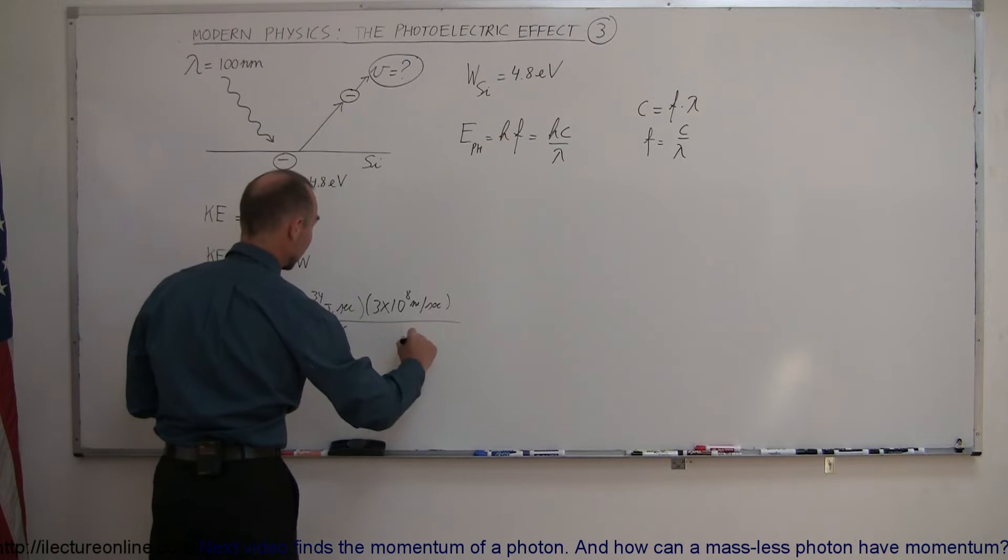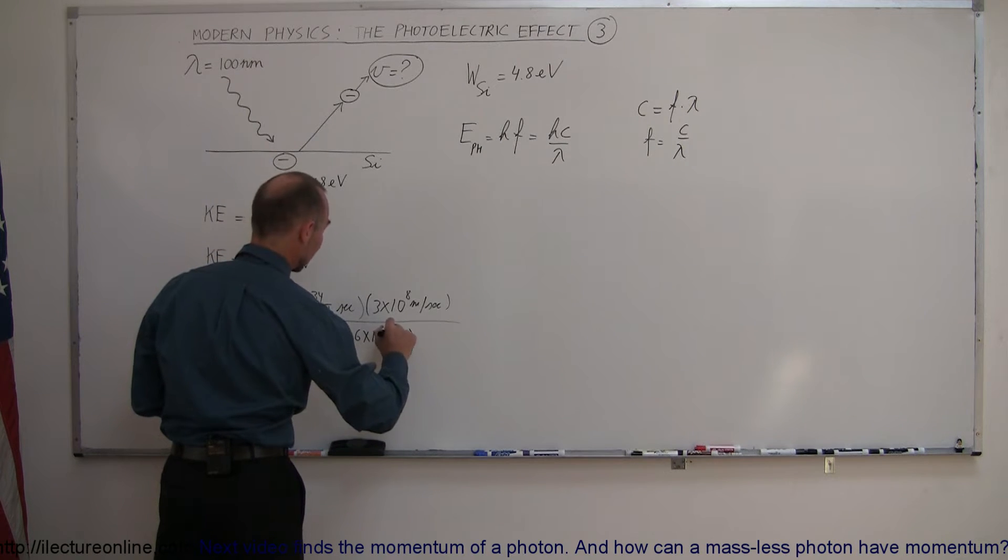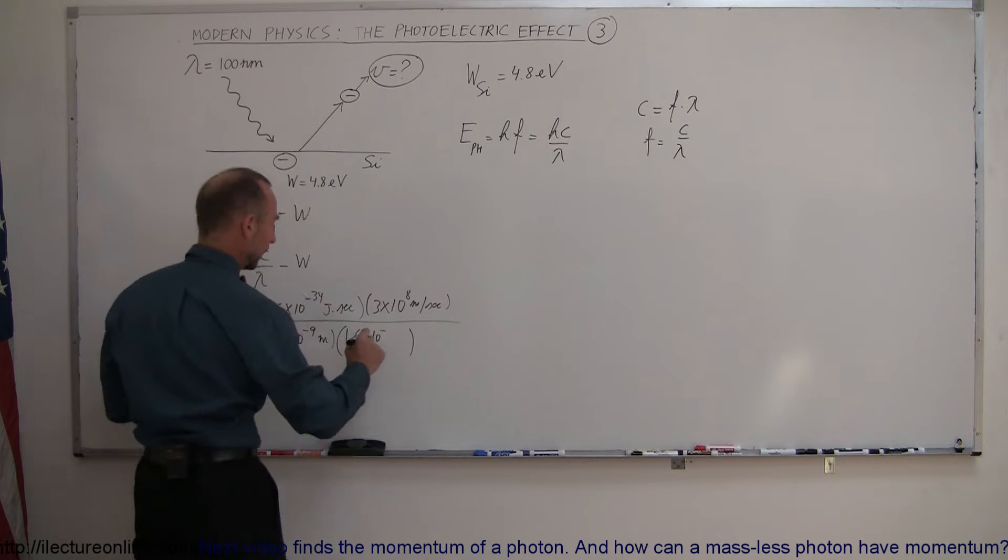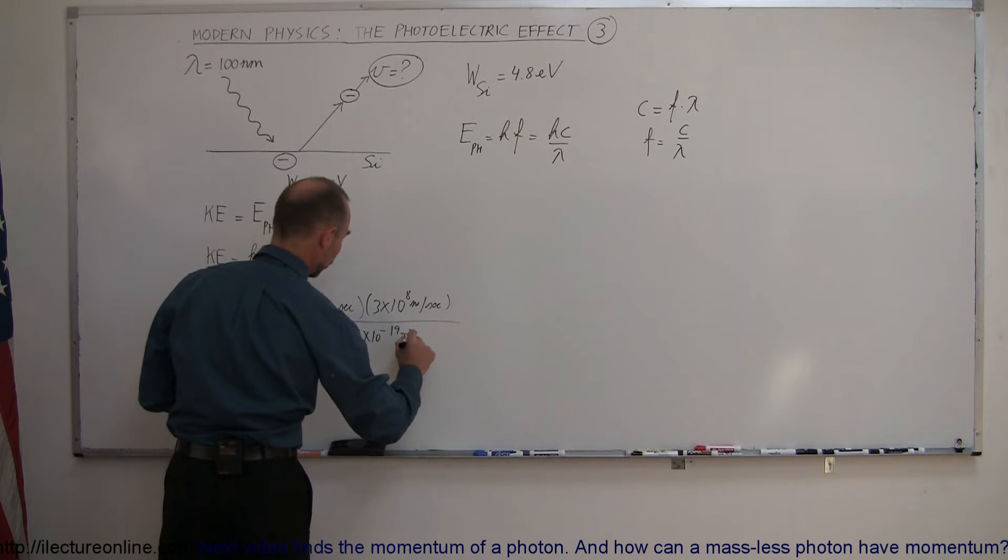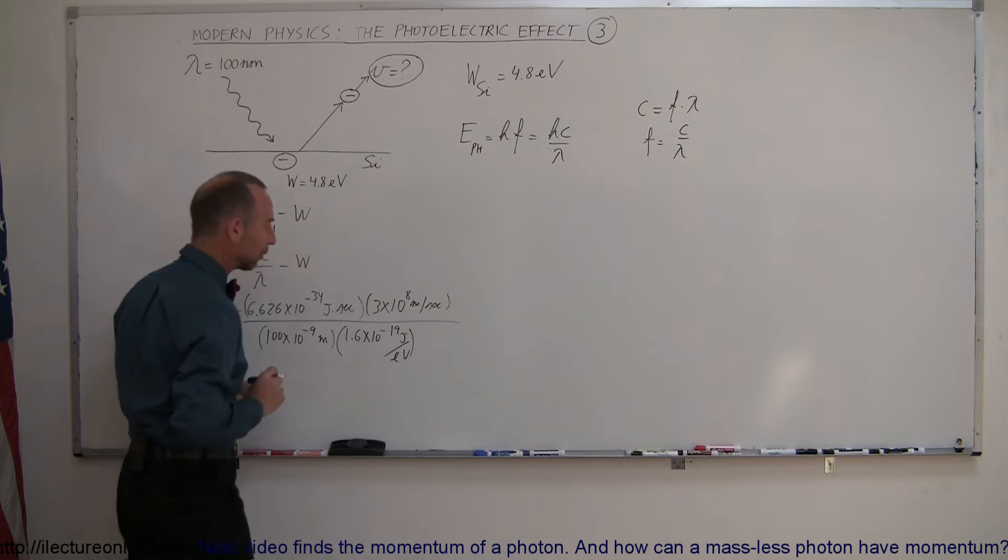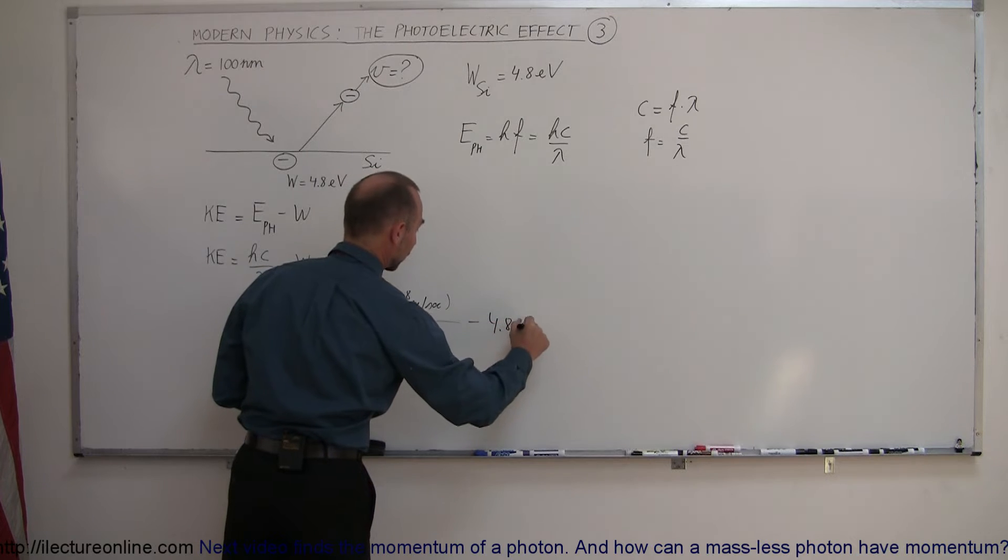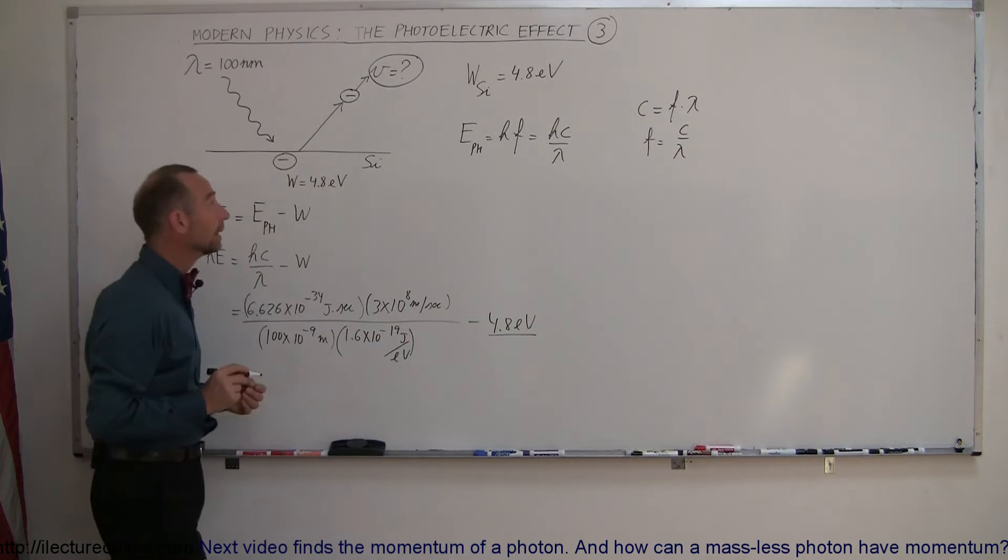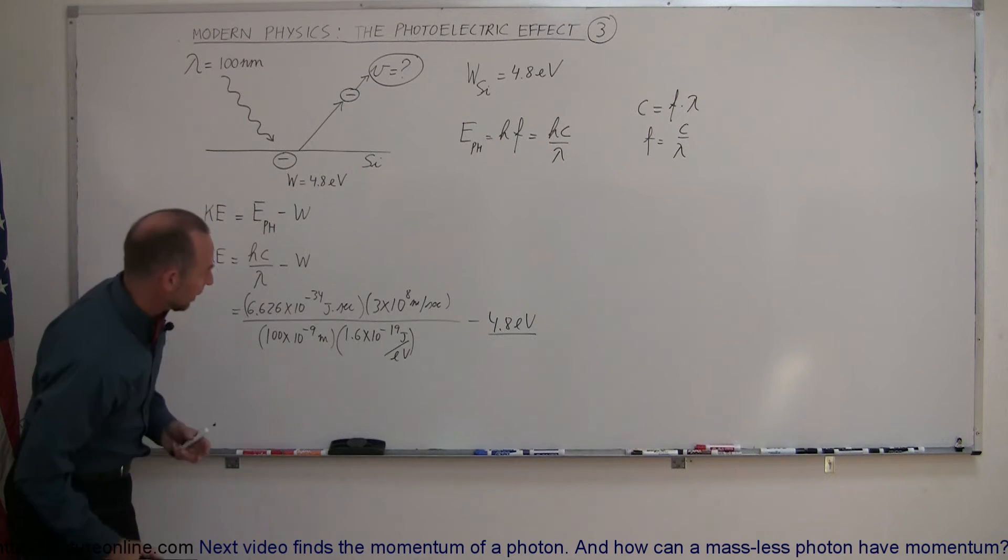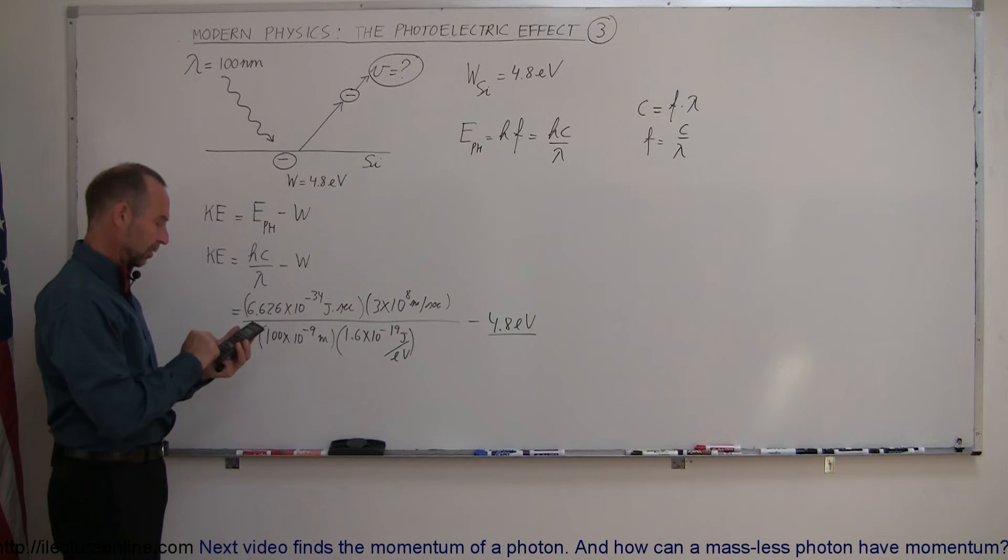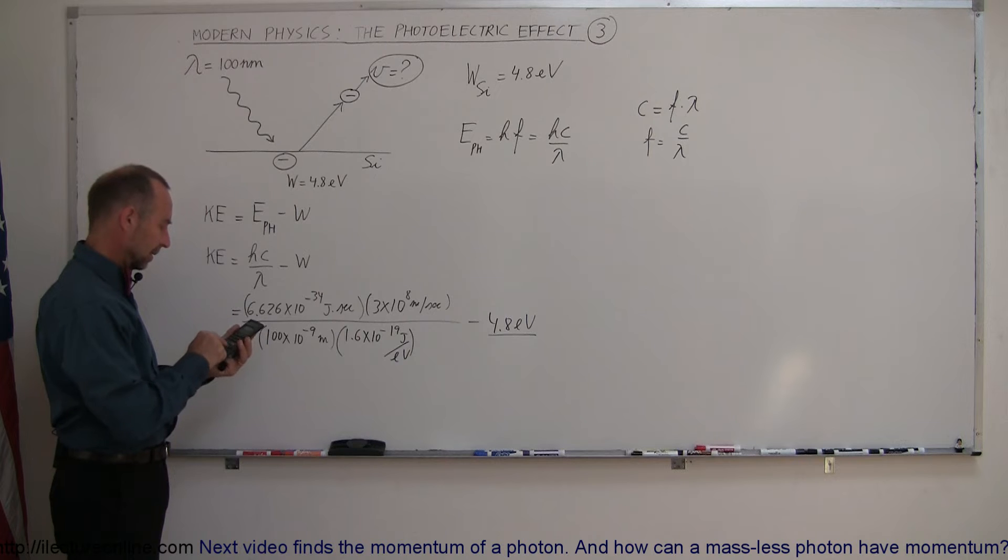Converting that to electron volts, we can go this is equal to 1.6 times 10 to the minus 19 joules per electron volt. That will convert that to electron volts and subtract from that the 4.8 electron volts for the work function of the silicon metal. With the calculator, 6.626 e to the 34 minus times 3 e to the 8 divided by 100 e to the 9 minus and divide by 1.6 e to the 19 minus.